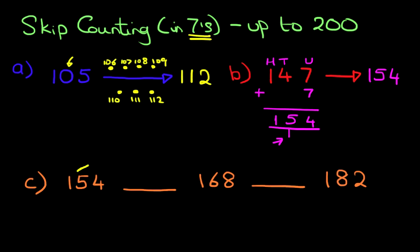We've got number 154 and we're going to use the dot method for the first one. Counting in sevens, so seven dots. One, two, three, four, five, six, seven dots. Our starting point is 154. Let's start counting.